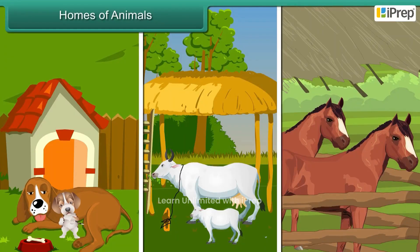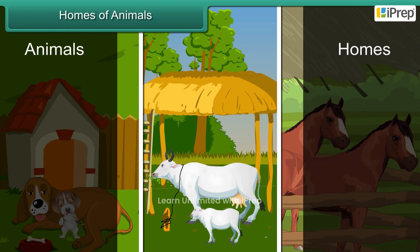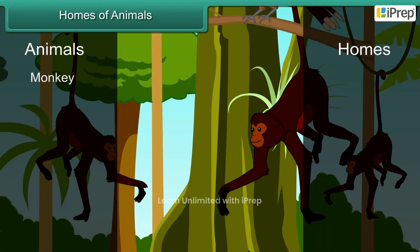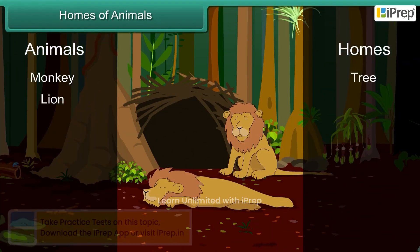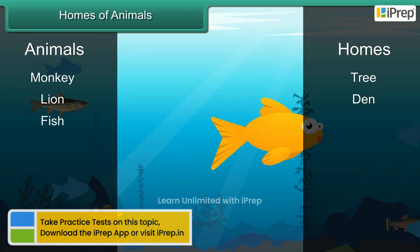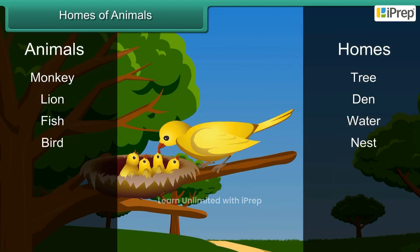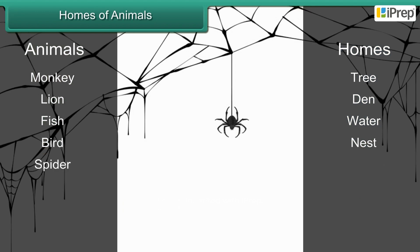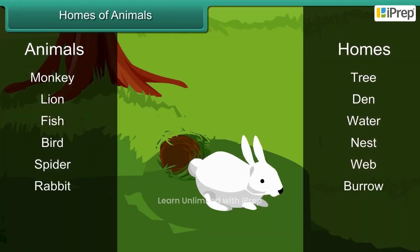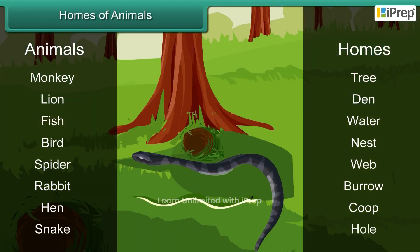Animals live in different homes: Monkey lives in a tree, Lion lives in a den, Fish lives in water, Bird lives in a nest, Spider lives in a web, Rabbit lives in a burrow, Hen lives in a coop, and Snake lives in a hole.